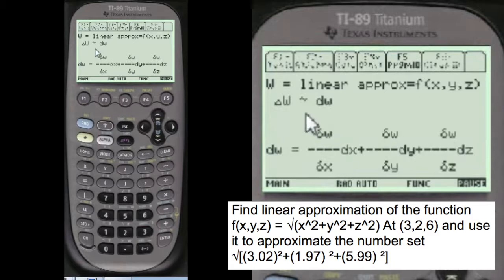Here's the formula. W equals linear approximation equals the function of x, y, z. And the change in the function here is almost the same as the derivative of the function. So here's the derivative here. Write this stuff on your paper, of course.